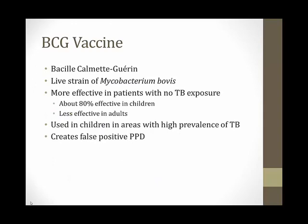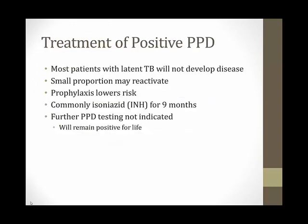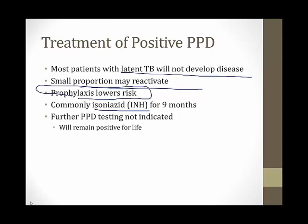There is also a false positive that can occur in patients who've received the BCG vaccine — a live strain of Mycobacterium bovis. It's not very effective and not widely used; it's about 80% effective in children, less in adults with prior TB exposure. It's used in children in high TB-prevalence areas but not in the United States. BCG will create a false positive PPD. For patients with a positive PPD, treatment for presumed latent TB is offered — commonly isoniazid (INH) for nine months. After treatment, never repeat the PPD since it will always remain positive; instead, use chest X-ray for future workup.